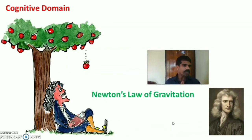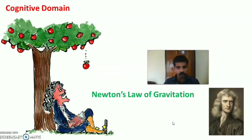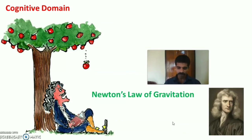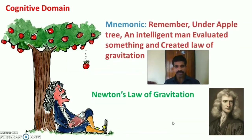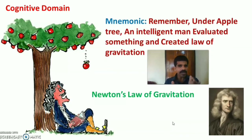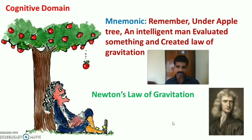Next is a mnemonic for the cognitive domain. You can remember Newton's law of gravitation to recall the levels. The mnemonic is: 'Remember, Under Apple Tree, An Intelligent Man Evaluated something and Created the law of gravitation' — representing remember, understand, apply, analyze, evaluate, and create.